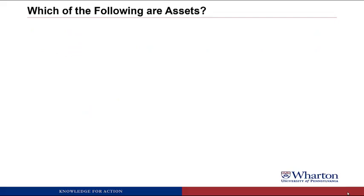Now we're going to practice applying these criteria to figure out which of the following items would be assets. I'll give you a number of items, and for each one I want you to try to figure out whether it's an asset or not. If it's an asset, try to give the account name and the dollar amount. If it's not an asset, try to figure out which criteria it fails. I'll bring up the pause sign so you can try to answer yourself, or you can just roll through and listen to the answers.